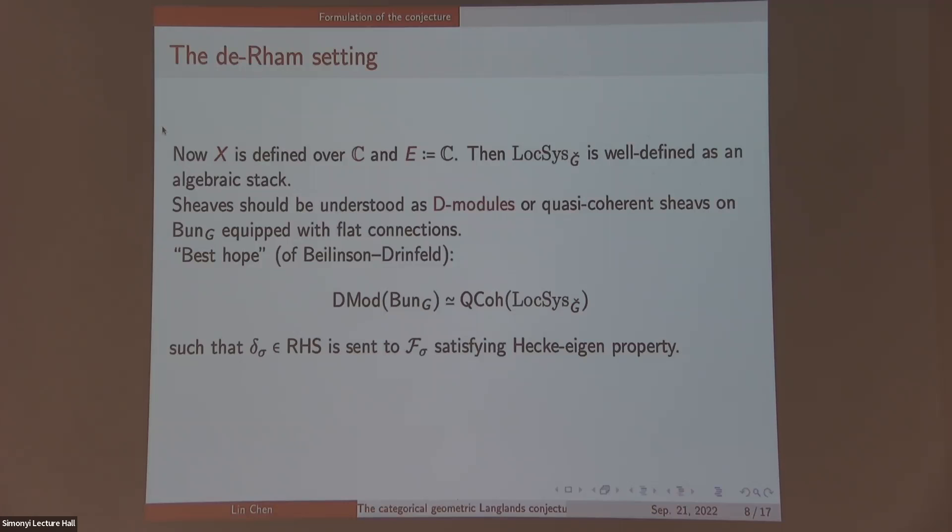Then the best hope, due to Beilinson and Drinfeld, says that there might be an equivalence from D-mod of Bun_G to quasi-coherent sheaves on Loc_SG-check, such that the delta sheaf at sigma on the right-hand side is sent to F-sigma constructed before. Unfortunately, this is not the case unless G is the torus. When G is the torus, this follows easily from Fourier-Mukai theory.